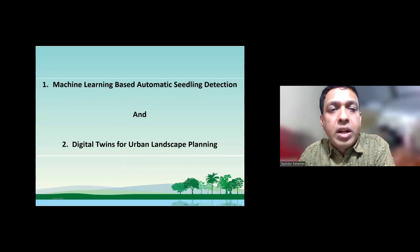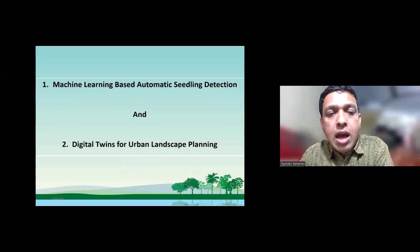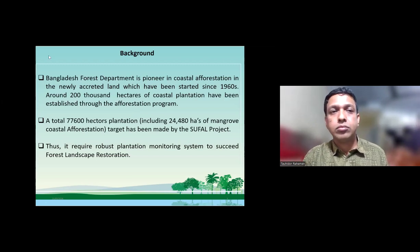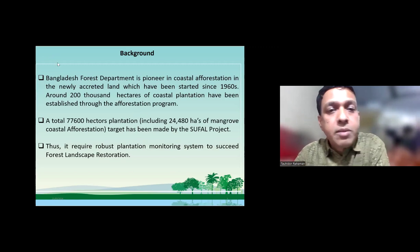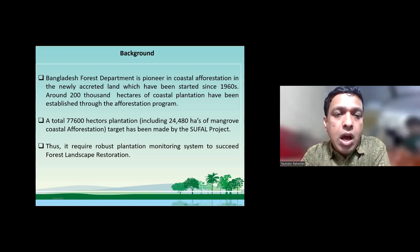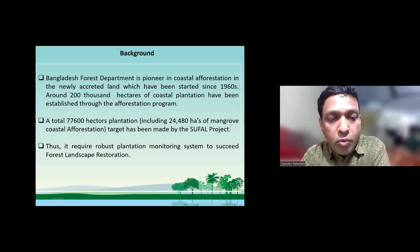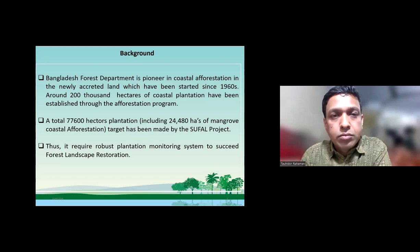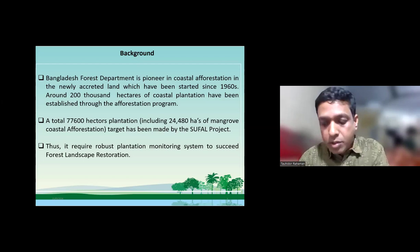The presentation has two main components. One is machine learning-based seedling detection and plantation monitoring. The second one is digital twins for urban landscape plantation. I'll take most of the time on the first component. Bangladesh Forest Department is a pioneer in coastal afforestation — they have been doing this plantation since the 1960s. They have successfully raised more than 200,000 hectares of coastal plantation, and 77,600 hectares of plantation is targeted under one of the largest projects of the forest department called the Shubhol project. That is why a robust plantation monitoring system is required to succeed the forest landscape restoration process.